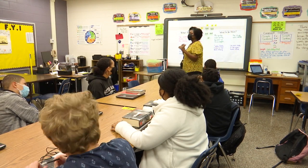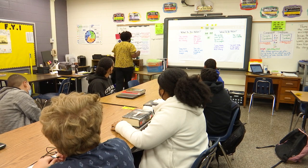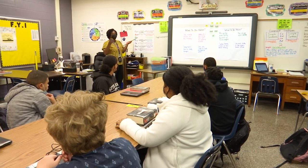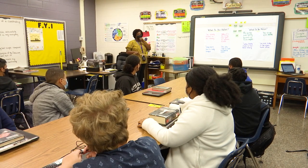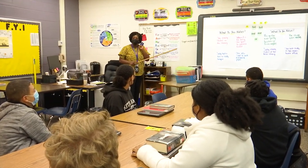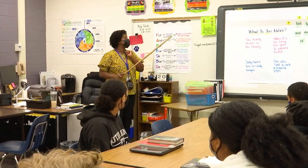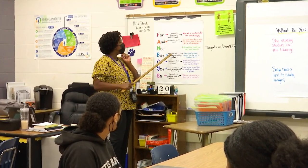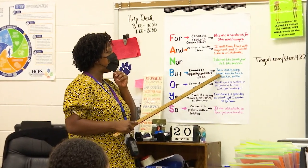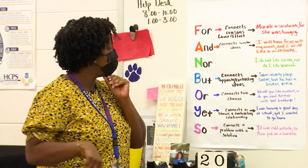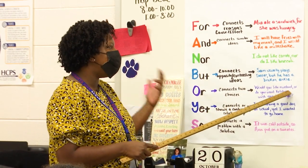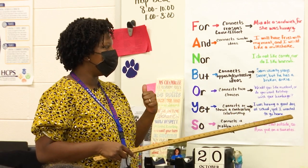So we're going to look at three of them. We're going to look at 'and' — we use this quite a few times in our writing. 'And' connects similar ideas. For example: I will have fries with my meal, comma, and I would like a milkshake. 'But' connects opposite or contrasting ideas. For example: Sam usually plays soccer, comma, but he has a broken ankle. And the last one, 'or' — it connects choices. Would you like mustard, or do you want ketchup with your hamburger?